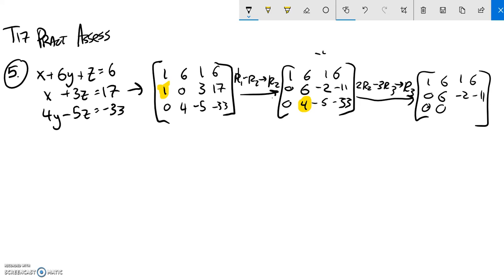Negative 2 times 2 is negative 4. Negative 5 times negative 3 is 15. So that's going to be an 11. And then here I have 2 times negative 11 is negative 22. Negative 3 times negative 33 is 99. So that gives me a 77.